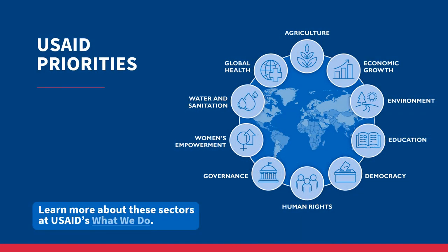USAID works in several technical sectors, including agriculture, economic growth, environment, education, democracy, human rights, governance, women's empowerment, water and sanitation, and global health. The agency applies broad global approaches and strategies in each sector; however, the country or regional mission determines which of these technical areas to prioritize based on local needs and available resources. Later in this module, you will learn how to find information about these approaches and strategies.